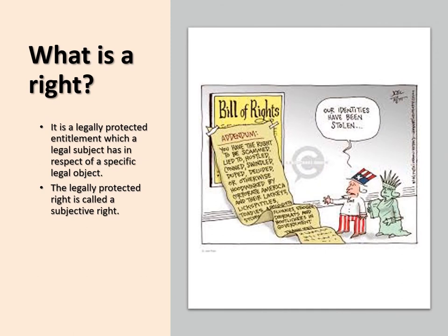What is a right? It is a legally protected entitlement which a legal subject has in respect of a specific legal object. For instance, ownership — when I say I own this computer, I have a legally protected entitlement in respect of the legal object. A legally protected right is called a subjective right. We have different kinds of rights — we have a bill of rights. Rights are legally protectable, and when they are violated, one is entitled to some remedies.